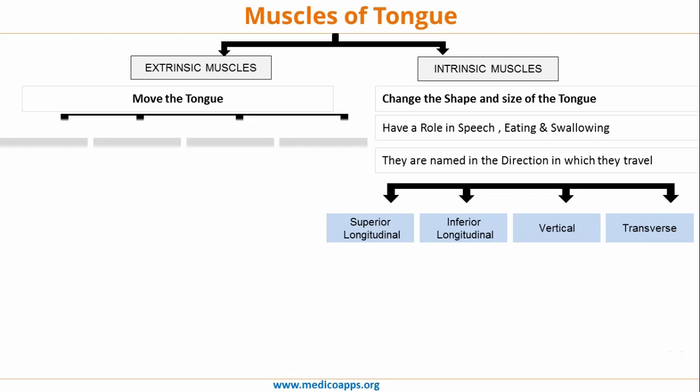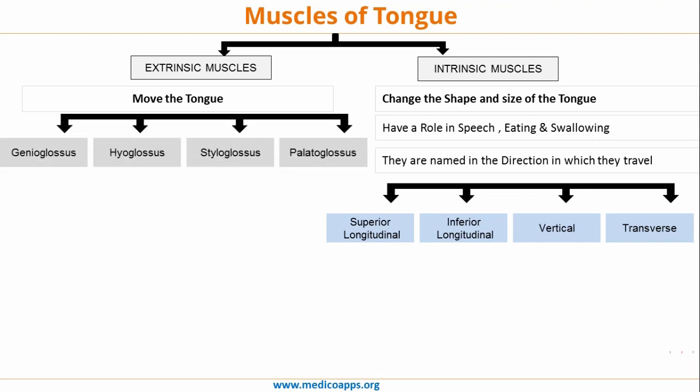The extrinsic group of muscles — again we have four groups of extrinsic muscles: the genioglossus, the hyoglossus, the styloglossus and the palatoglossus. These are the four extrinsic group of muscles.